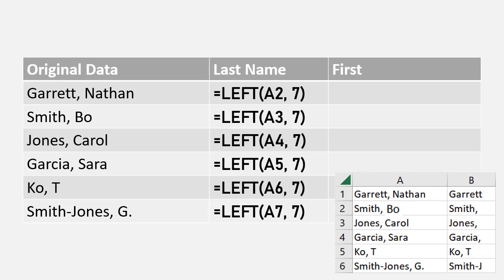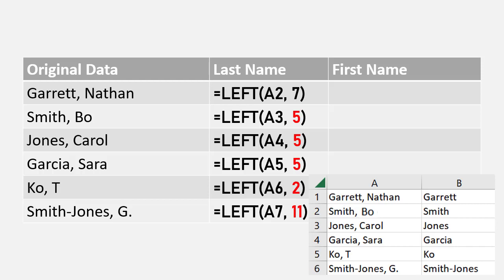Now I can use this in my original table, but there's one significant problem. When I copy the function all the way down, you see that other people have different lengths of last names, and so the function doesn't work properly for them. What I really want is a function that has a different length for each last name — so Garrett should have seven, Smith five, Co two, and Smith Jones eleven.